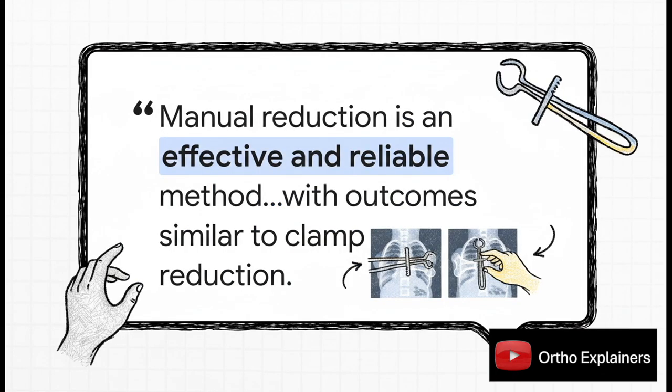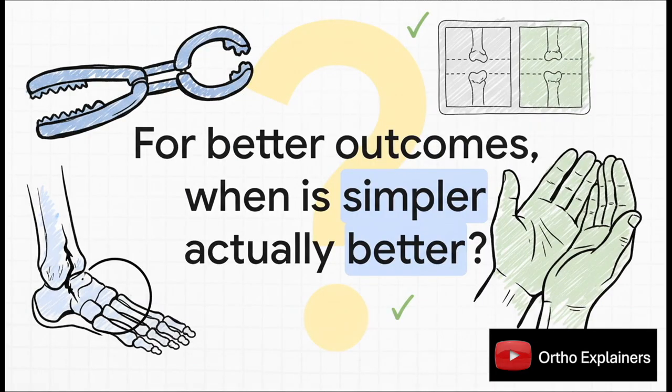And hey, don't just take my word for it. The researchers themselves say it best. They concluded, and I'm quoting here, that manual reduction is an effective and reliable method with outcomes similar to those with clamp reduction. The underdog fought the champion to a draw. And it all leaves us with this one big thought-provoking question that goes way beyond just ankle surgery. In our constant search for better outcomes, with all this incredible new medical technology, this study is a great reminder to stop and ask, when is simpler actually better? Sometimes the best tool for the job has been right there on our hands all along.